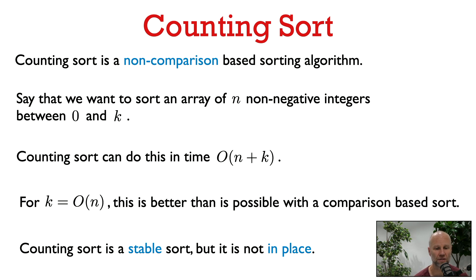Counting sort is a non-comparison-based sorting algorithm. We're going to assume that we want to sort non-negative integers, which is important for the working of counting sort. If we have an array of n non-negative integers where all integers are between 0 and k, counting sort can sort this array in time O(n + k). So if all the integers are at most a constant times n, then the overall running time is O(n), which is actually faster than is possible with a comparison-based sorting algorithm.